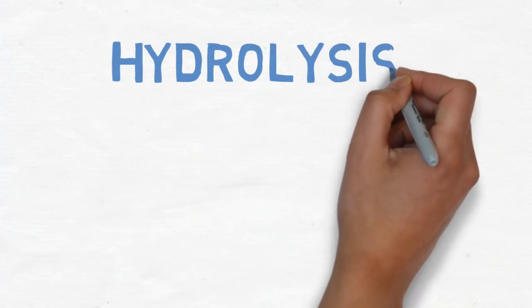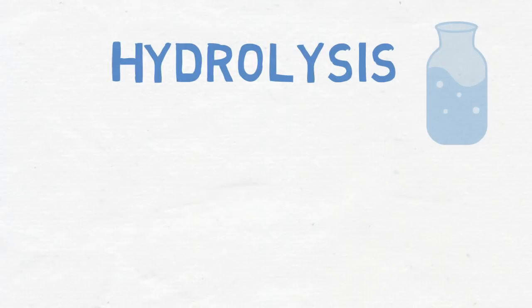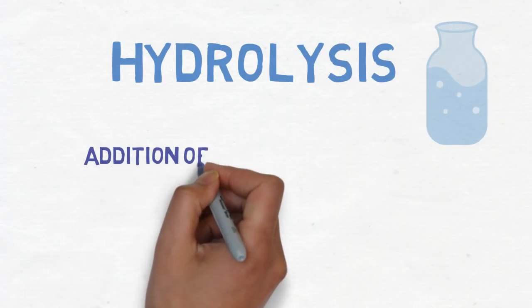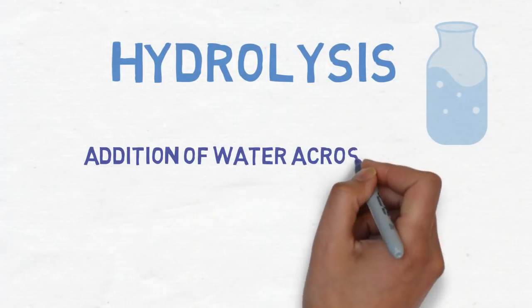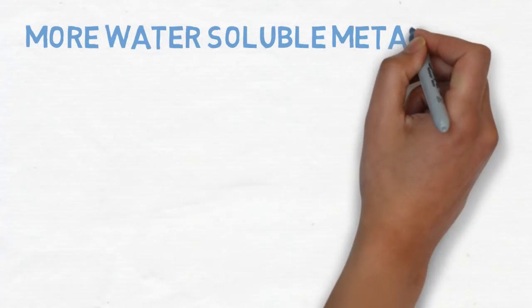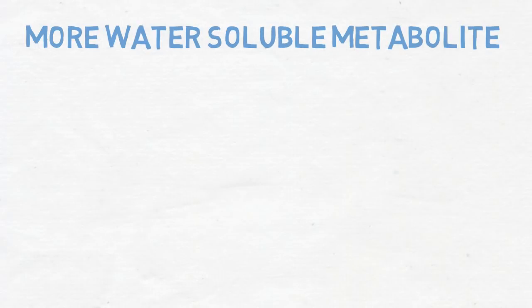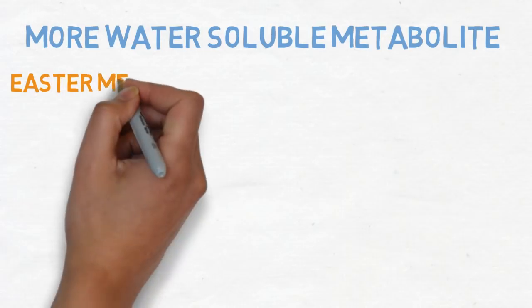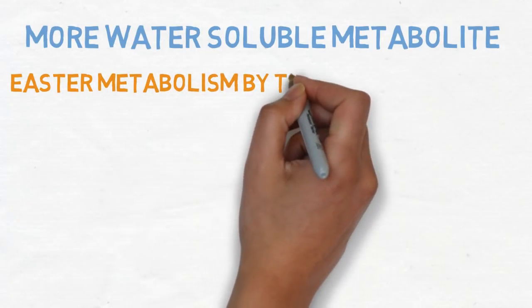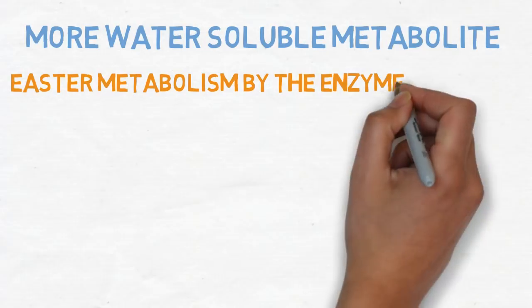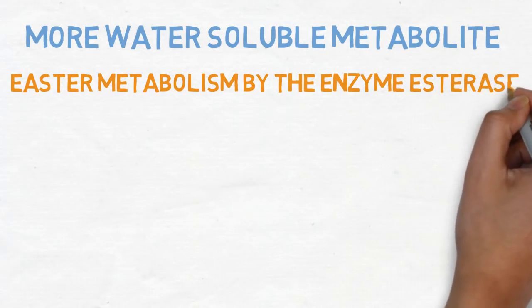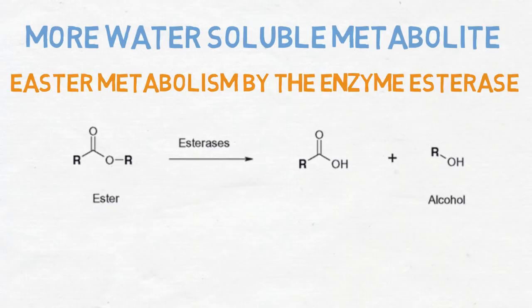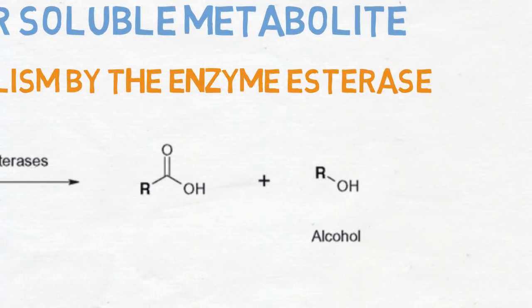The last type of phase 1 metabolism reaction is hydrolysis. Hydrolysis is basically the addition of water across a bond, resulting in a more water-soluble metabolite. A great example of that is ester hydrolysis, which is performed by the enzyme esterase, found throughout the body. Esterase is the enzyme responsible for the hydrolysis of an ester into a more soluble alcohol or carboxylic acid.